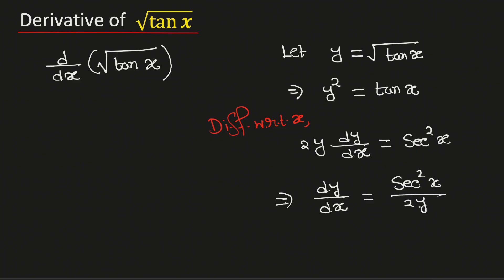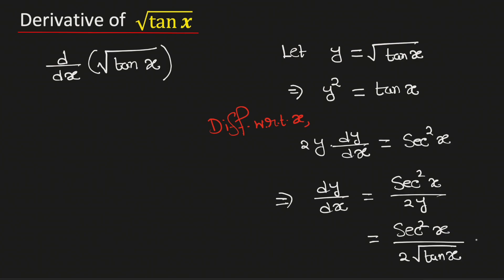Now put the value of y, which is square root of tan x. Therefore the derivative of root tan x will be equal to sec squared x divided by 2 times square root of tan x. And this is our final answer.